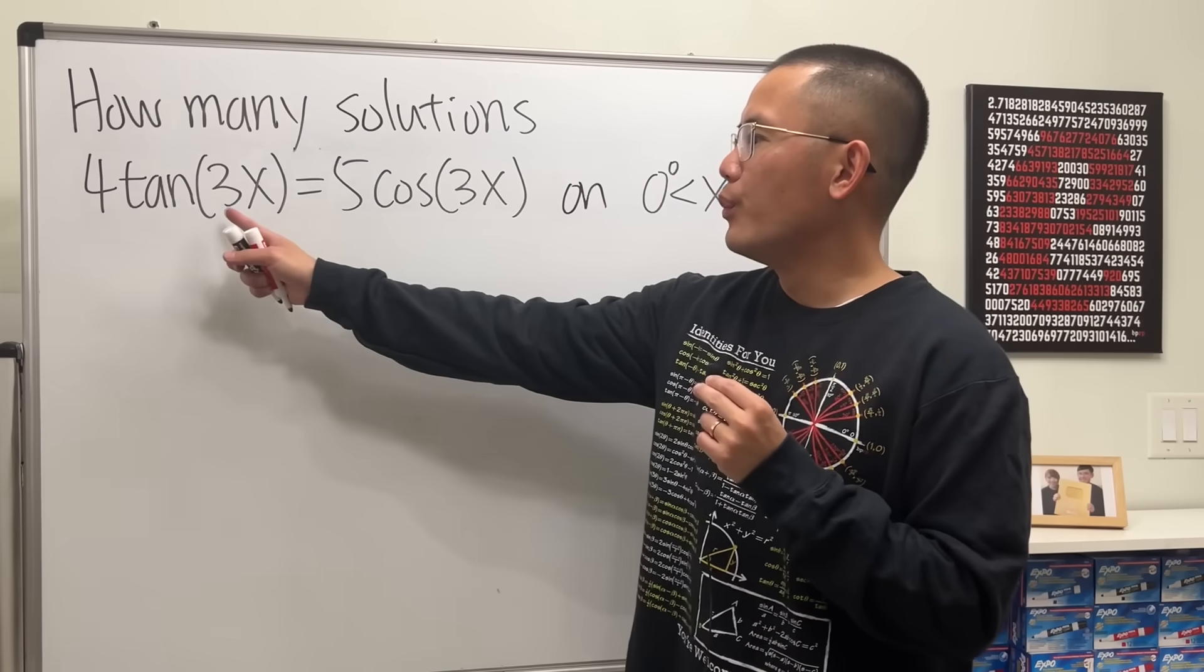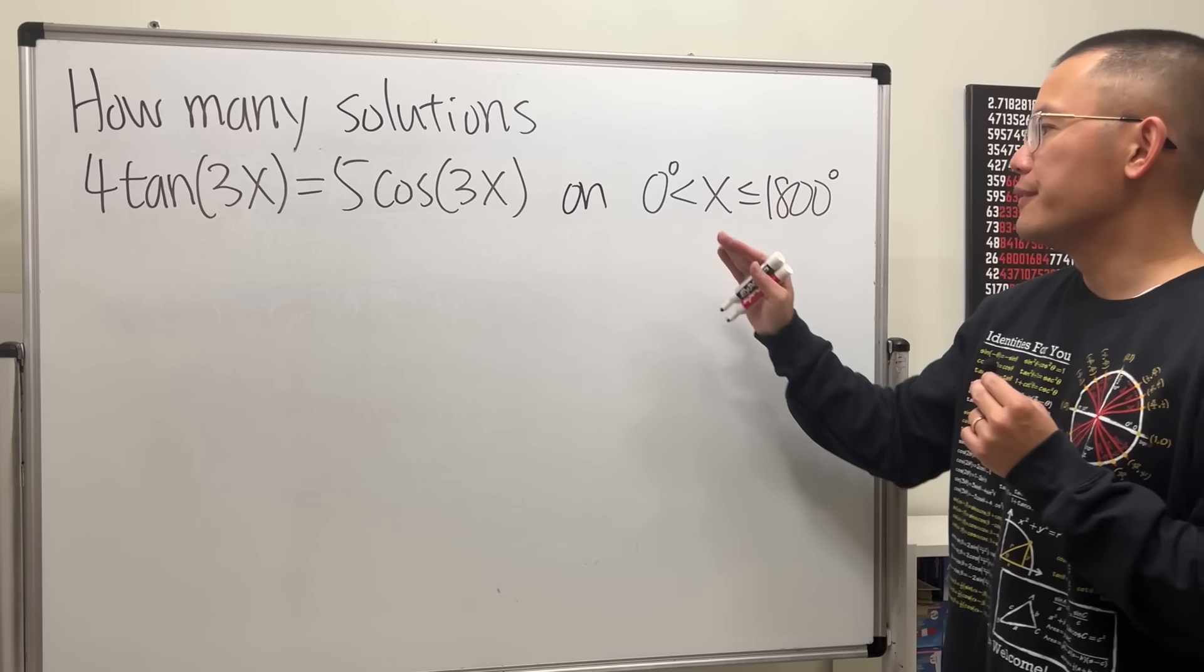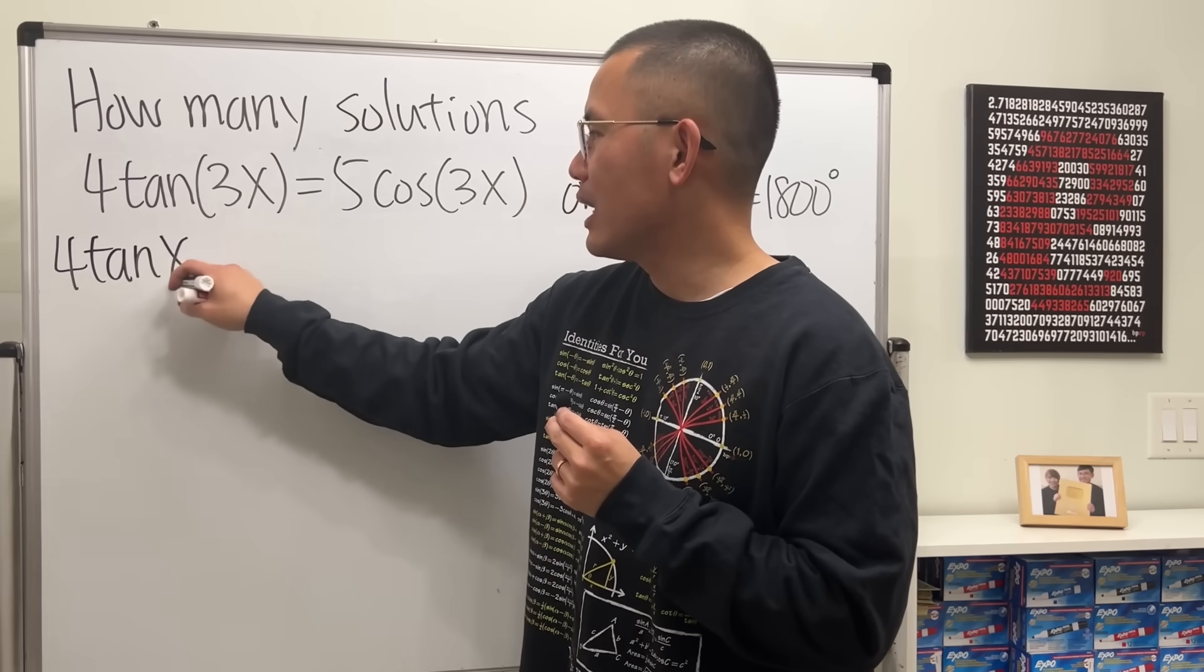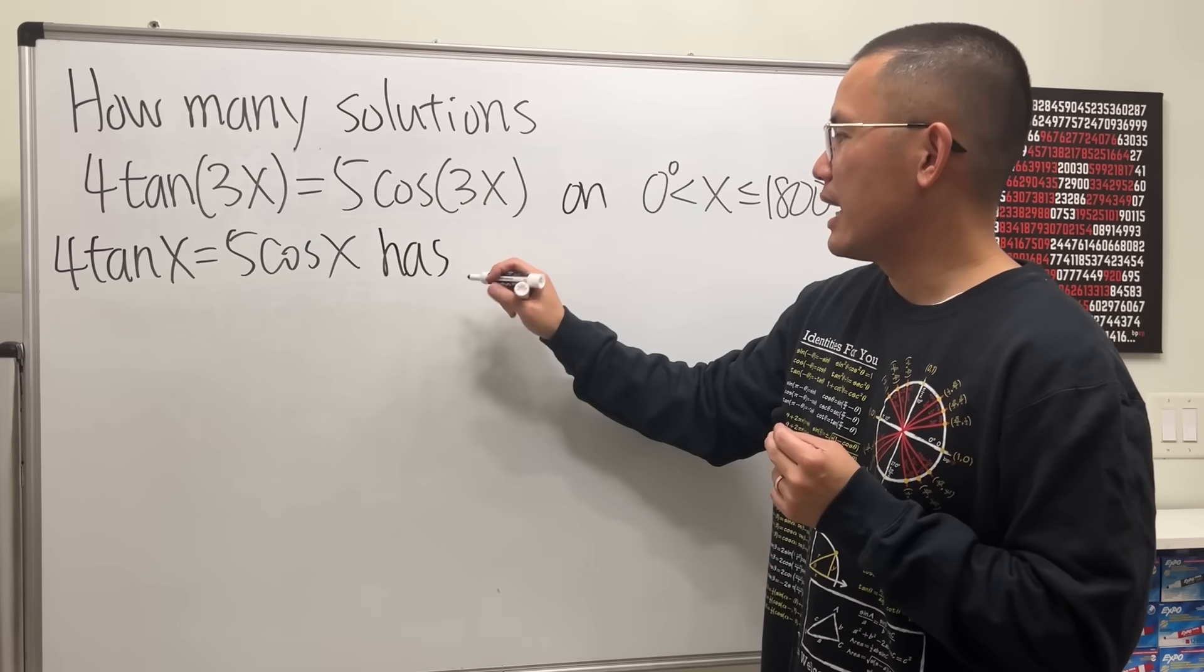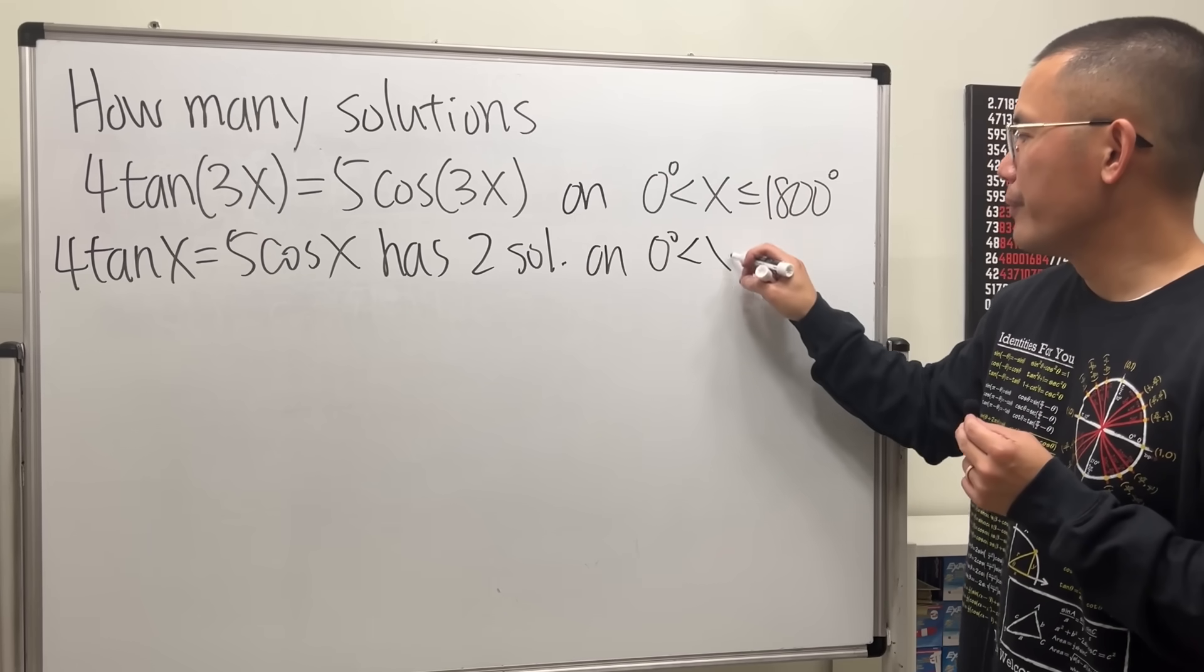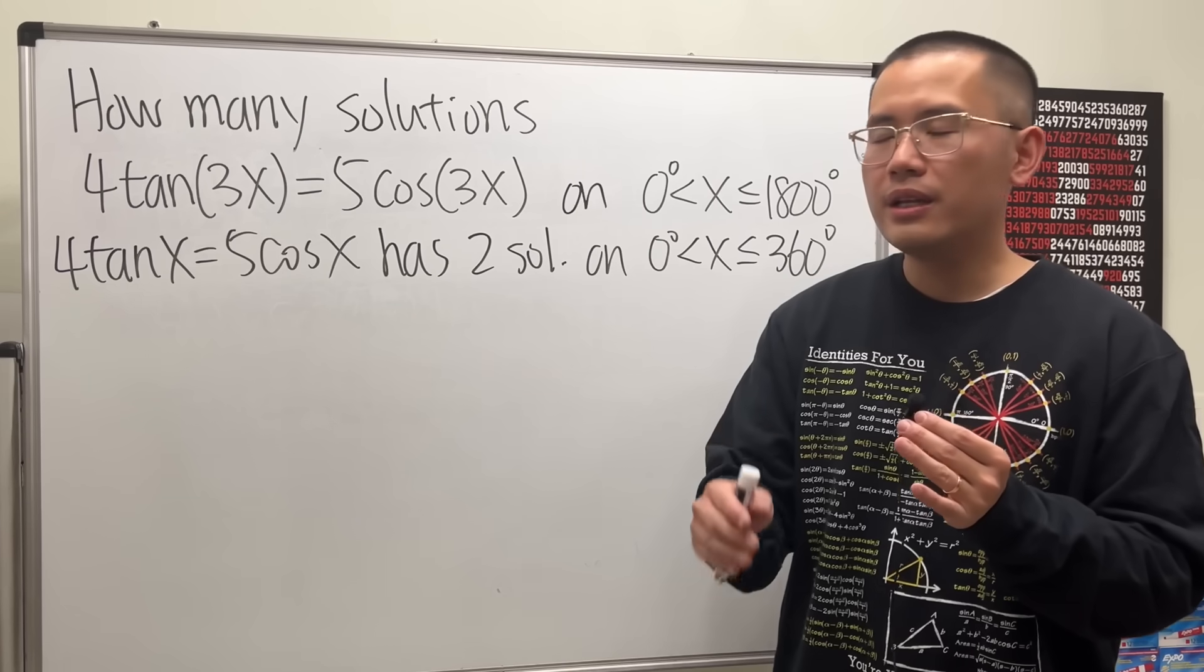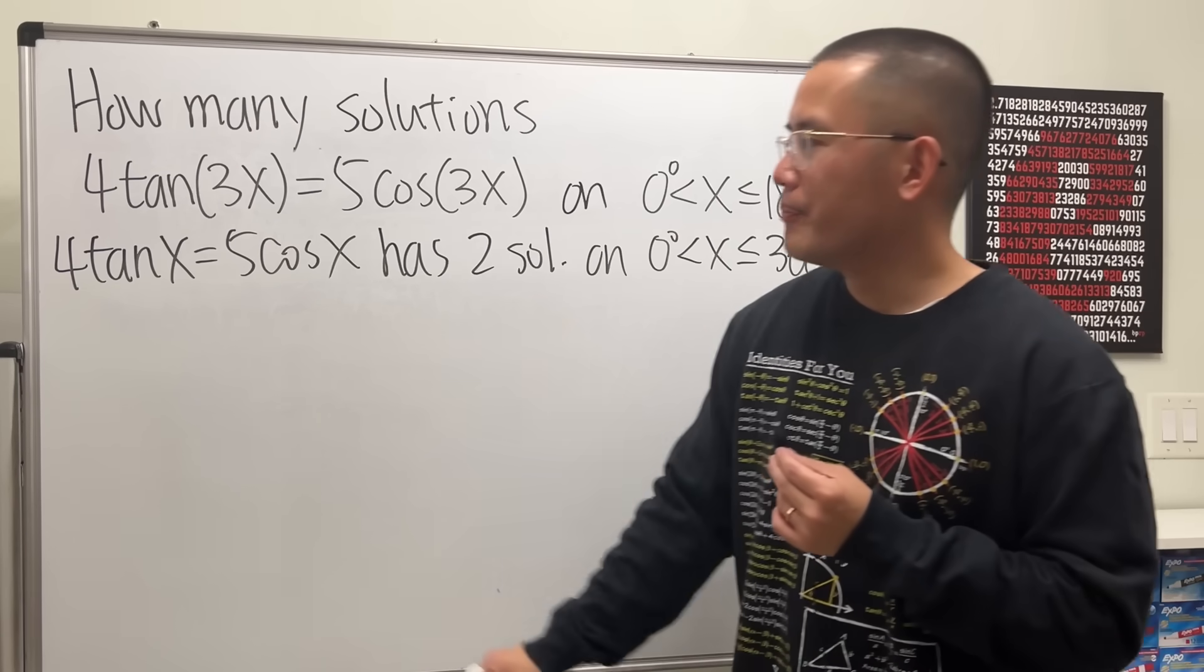Okay, for part C, notice that we have this 3 that's extra. And we just have to find out how many solutions does this equation have on the interval between 0 and 1,800 degrees. Well, this is all we have to do. We have already solved this equation without the 3. And we know that there are two solutions. So I will just say this has two solutions on the interval 0 and 360 degrees. Now, if I multiply the 3 directly to the x, you shorten the period. It's like this thing will happen three times as often as the original. So we just have to multiply the two by 3.